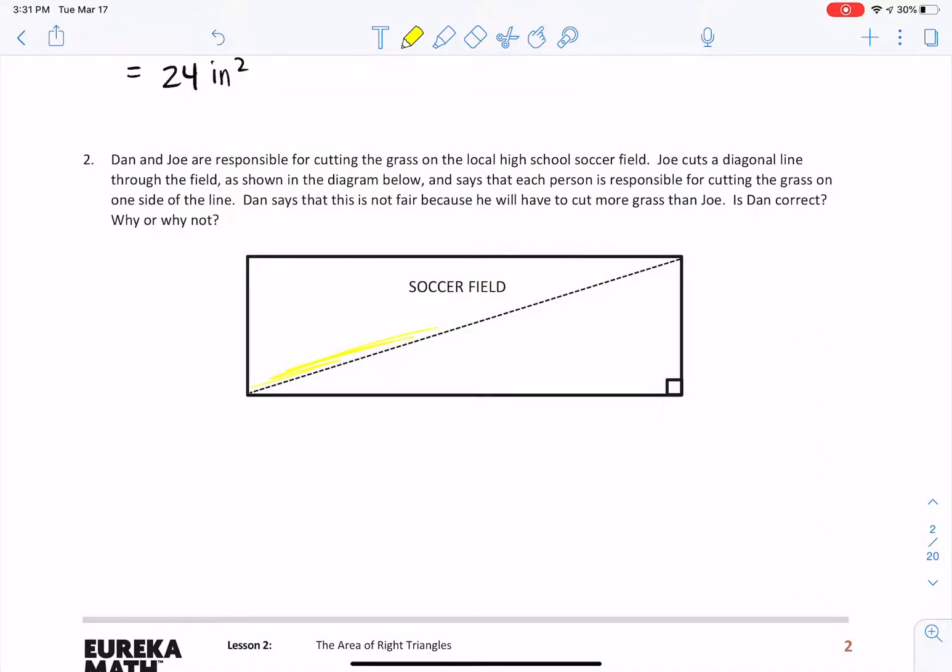So, the yellow side of the field, let me use the highlighter. The yellow side of the field would be one person's responsibility, and the white side of the field would be another person's responsibility. Is it fair? Do they have the same amount of work? The answer is, yes, of course, they have the same amount of work.